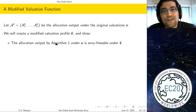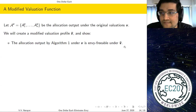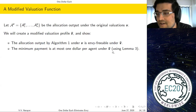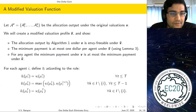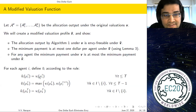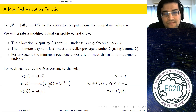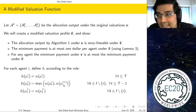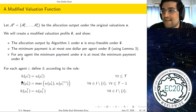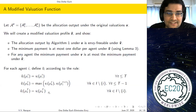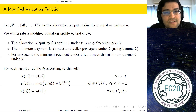Here is our plan. Let v be the original valuation. We construct a modified valuation v̄ and show: (1) the same allocation output under v is still envy freeable under v̄; (2) the minimum payment is at most $1 per agent under v̄ using the lemma; and (3) the minimum payment under v is at most the minimum payment under v̄, giving the $1 bound under original values. The modified valuation v̄ is defined as follows: for items agent i actually receives, v̄_i(μ_{i,t}) = v_i(μ_{i,t}). For items agent k receives in round t, v̄_i(μ_{k,t}) = max(v_i(μ_{k,t}), v_i(μ_{i,t+1})) — artificially inflating agent i's value if it is below the item agent i gets in the next round. Values in the last round are unchanged.